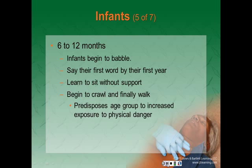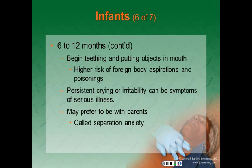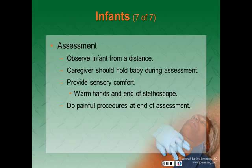From six to twelve months, infants begin to babble and by their first year say their first word. They learn to sit without support, begin to crawl, and finally begin to walk, which increases danger physically. They also begin teething and are prone to putting objects in their mouths, placing them at higher risk of foreign body aspirations and poisonings. Persistent crying or irritability can be a symptom of serious illness, and they may show signs of separation anxiety. To assess an infant, observe from a distance, let the caregiver hold them, warm your hands and stethoscope, and perform any painful procedures at the end of the assessment.